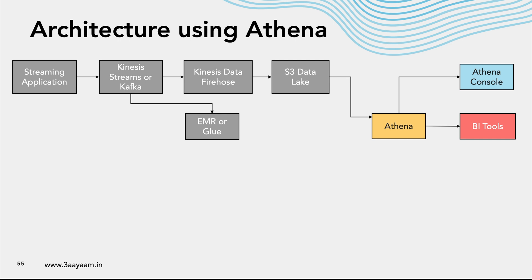That's where EMR or Glue would come into picture. It doesn't matter whether the data comes in via Kinesis Streams or Kafka — we want to do some real-time processing. If you're using Spark Streaming, you can use EMR or Glue. If you're using Flink, you'll have to use EMR, Kinesis Flink. If you're using Kafka Streams, you'll use something else. After all the aggregation and processing is done, we send the data to S3.